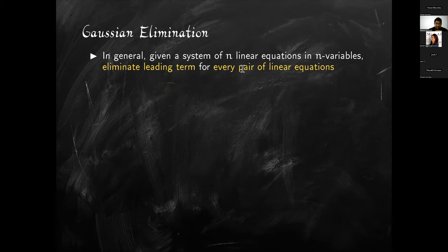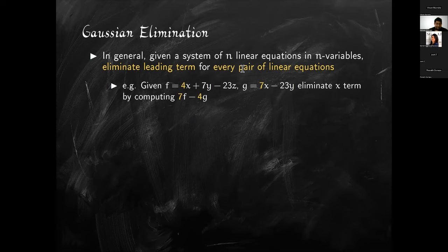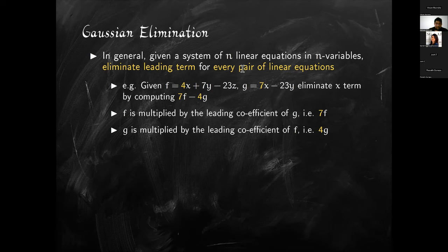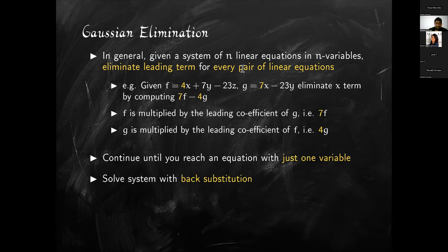After that example, we can describe Gaussian elimination in full generality: given a system of N linear equations in N variables, we eliminate the leading term for every pair of equations. In another example with polynomials F and G, where F has coefficient 4 for x and G has coefficient 7, to eliminate x we compute 7F minus 4G — an exchange of coefficients. We keep doing this for every pair of equations until we reach an equation with just one variable, then solve with back substitution.